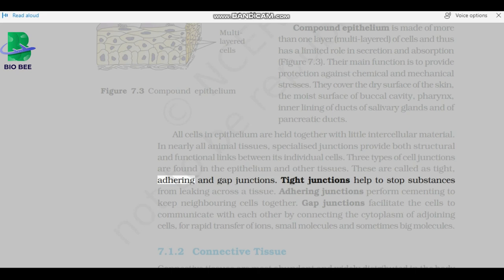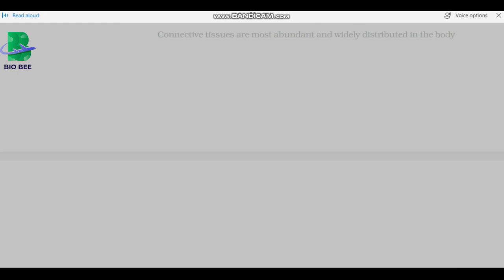Tight junctions help to stop substances from leaking across a tissue. Adhering junctions perform cementing to keep neighboring cells together. Gap junctions facilitate the cells to communicate with each other by connecting the cytoplasm of adjoining cells for rapid transfer of ions, small molecules, and sometimes big molecules.